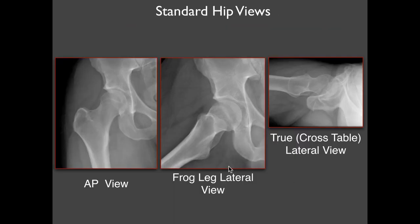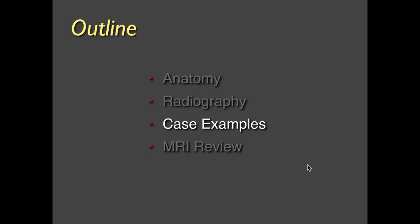Standard views of the hip can include an AP view, a frog leg lateral view, and a cross-table lateral view. We let our orthopedic surgeons and referring physicians determine what views they prefer, but a three-view hip series like this is not uncommon. Now I'll go through some case examples — not an exhaustive list of every possible hip disorder, but focused on some basic radiographic principles.